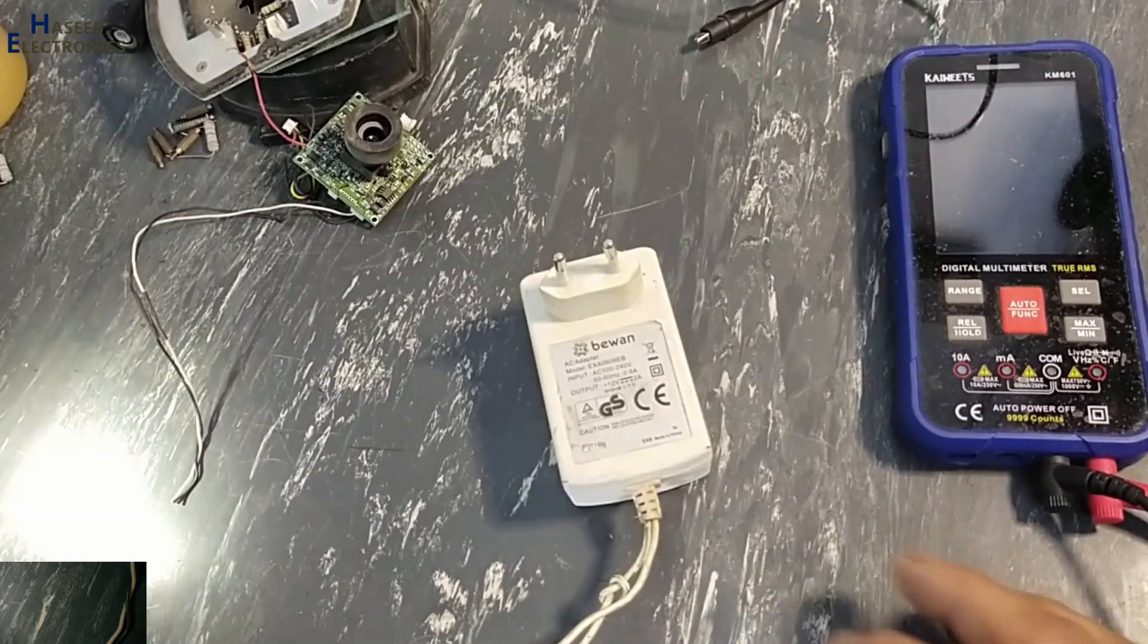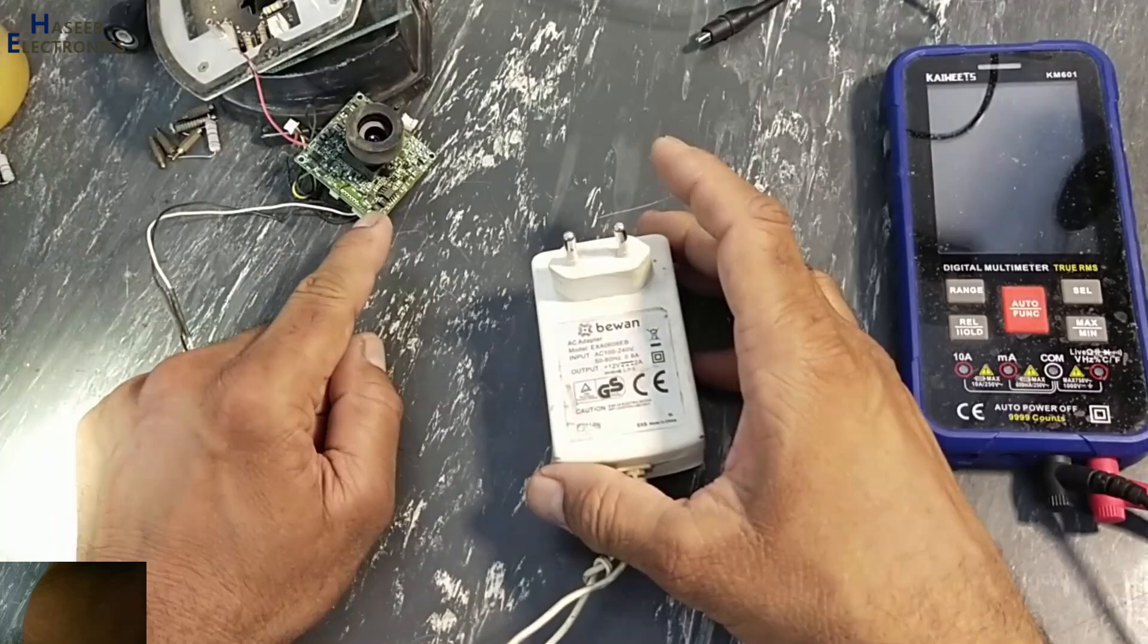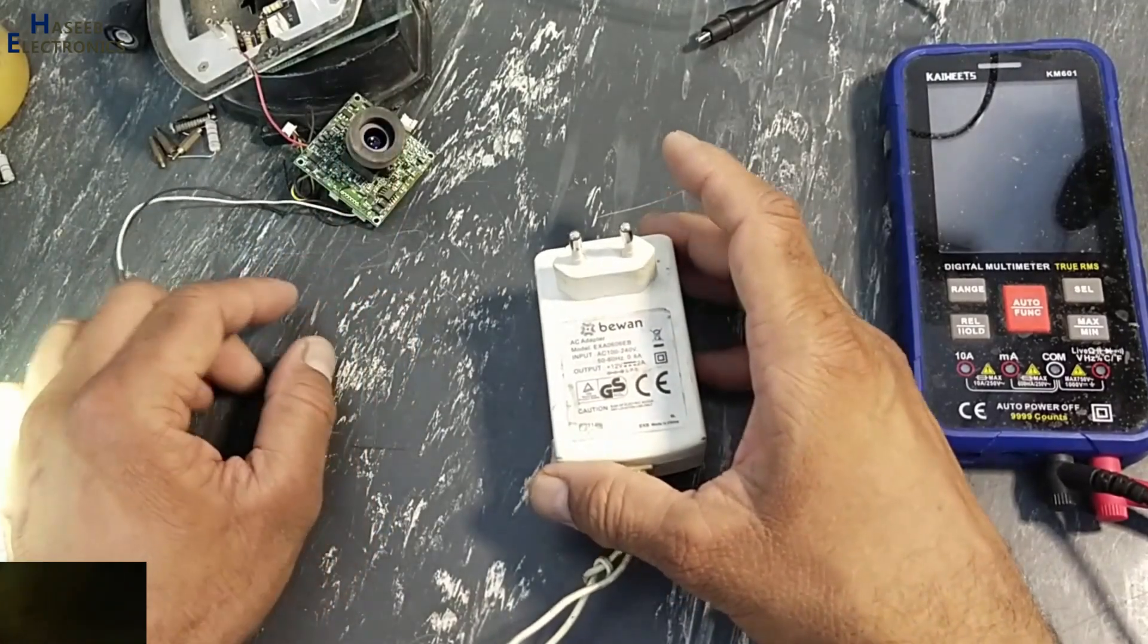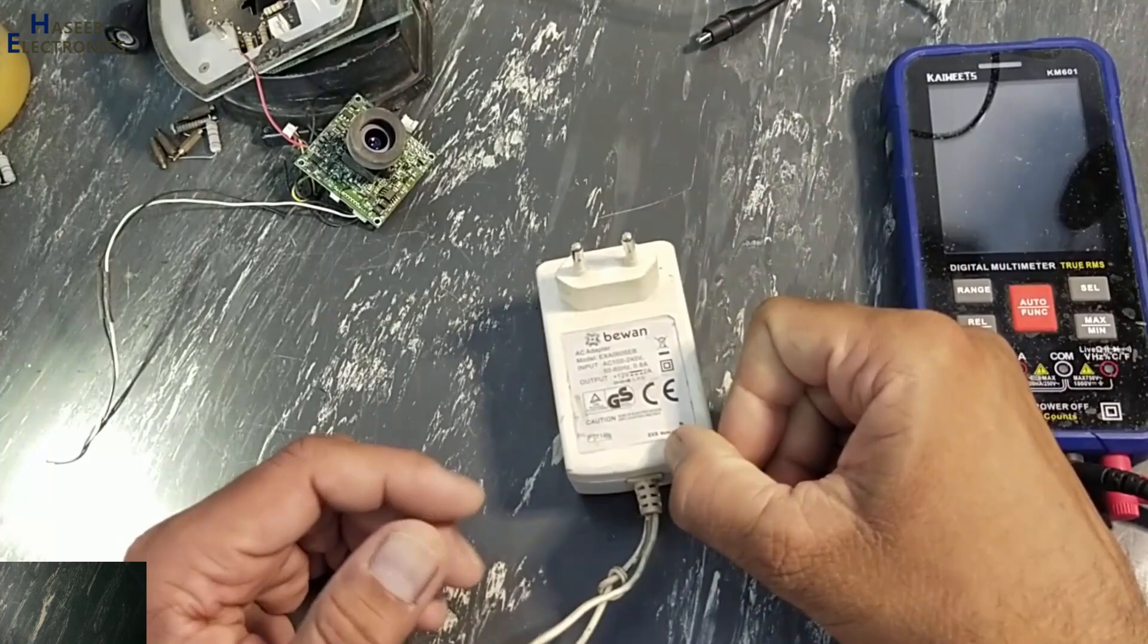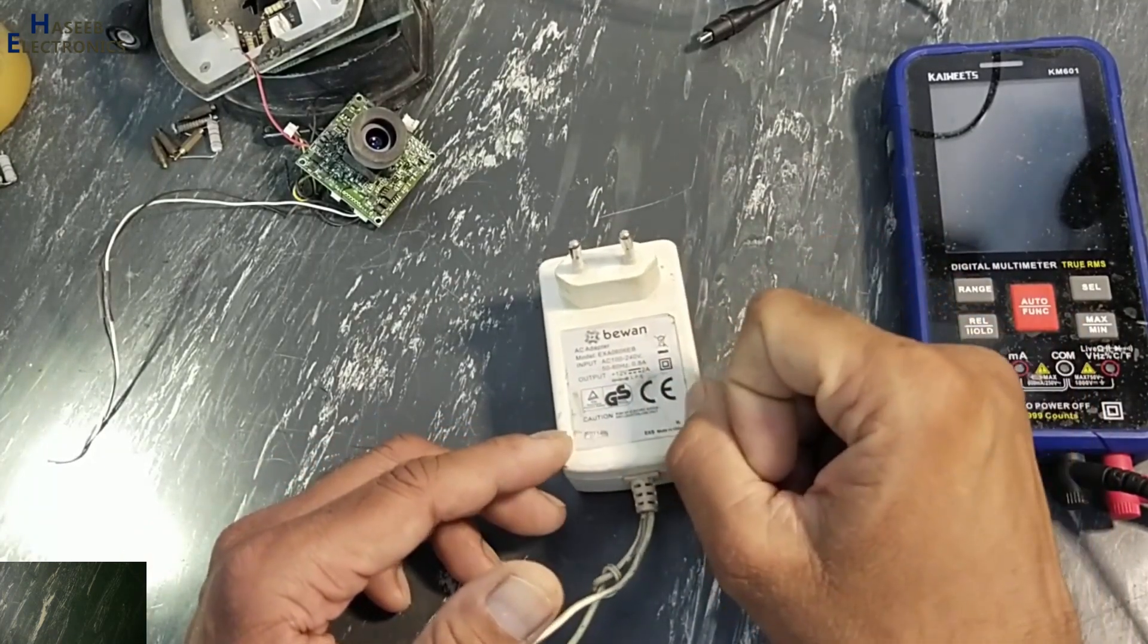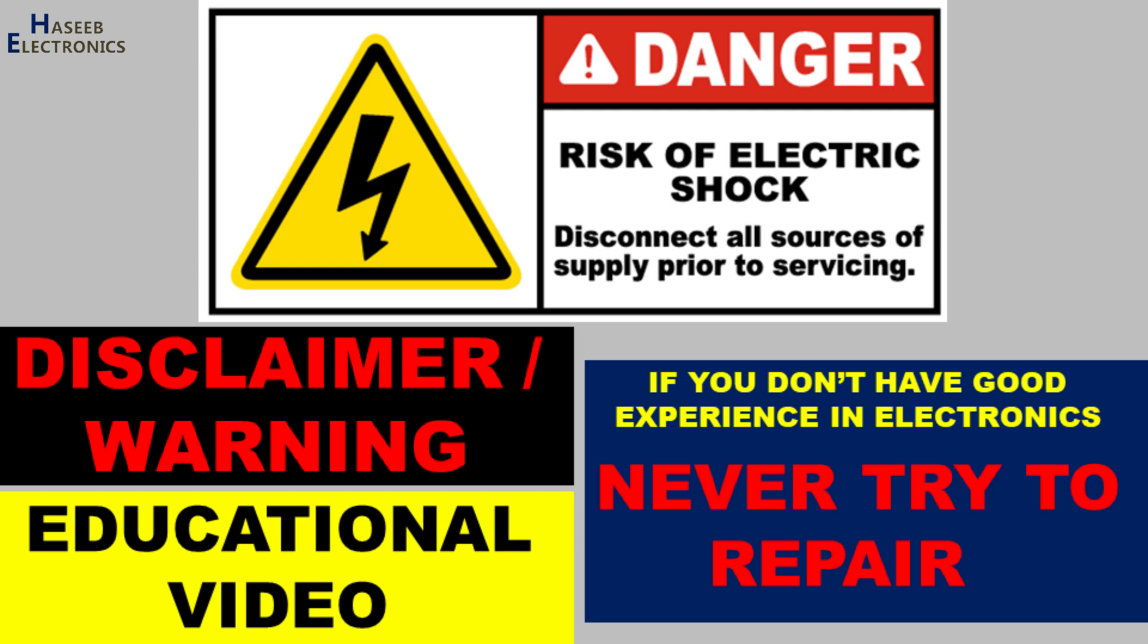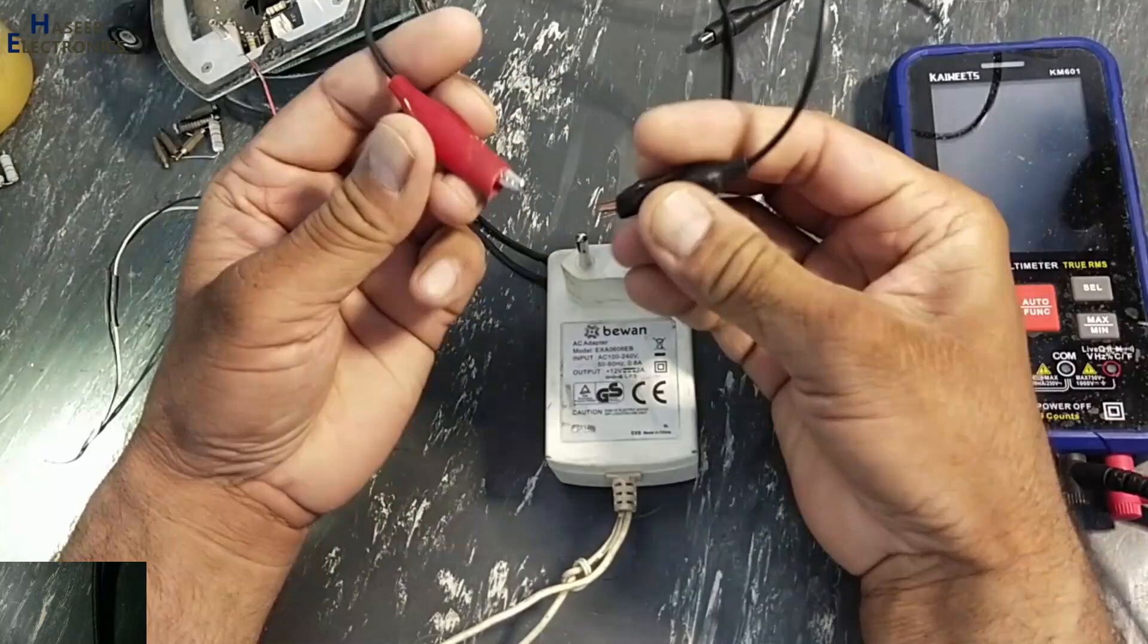As-salamu alaykum wa rahmatullahi wa barakatuhu friends, welcome back to my channel. While working on this IR camera, I found this power supply out of limit. It is providing 9 volt instead of 12 volt. If you don't have good experience in electronics, never try to repair.